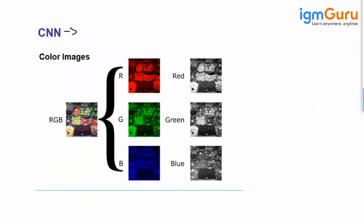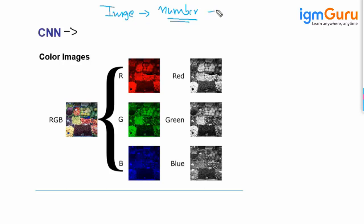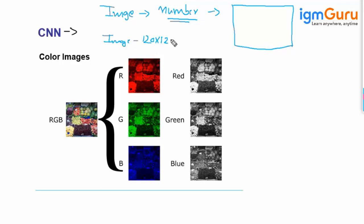When we have an image, for image processing we need to convert the image into some kind of numeric representation. To convert the image into numbers, we basically create a matrix. For example, if an image is 120x120, we are representing that image as a matrix having 120 rows and 120 columns.